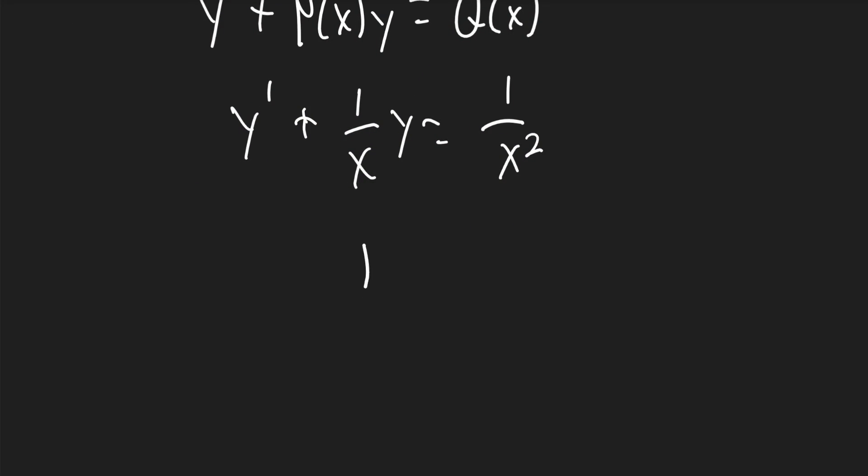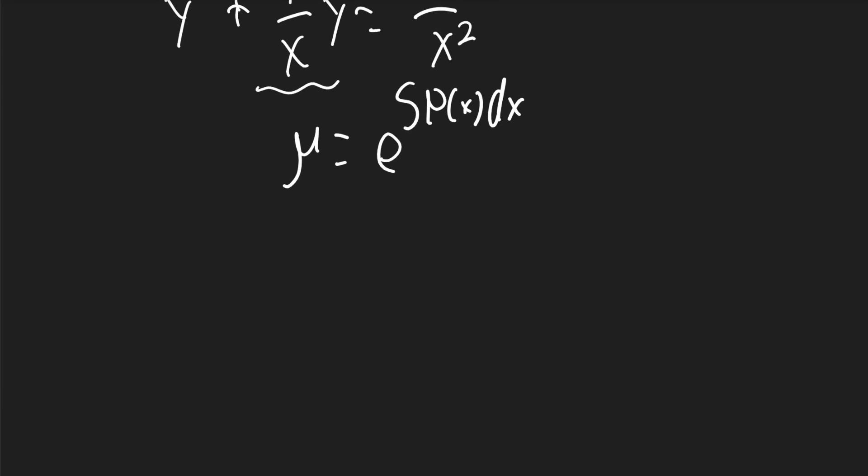Now I need to find mu. Mu is going to be equal to e to the power of the integral of p of x dx. We look for the p of x in the new equation, which is 1 over x. So mu is going to be equal to e to the power of the integral of 1 over x dx.